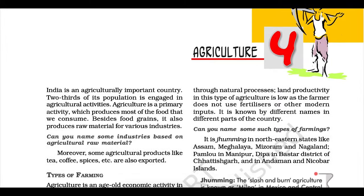Major crops. A variety of food and non-food crops are grown in different parts of the country, depending upon the variations in soil, climate, and cultivation practices. Major crops grown in India are rice, wheat, millets, pulses, tea, coffee, sugarcane, oilseeds, cotton, and jute. Rice is the staple food crop of a majority of people in India. Our country is the second largest producer of rice in the world after China. It is a Kharif crop which requires high temperature above 25 degrees centigrade and high humidity with annual rainfall above 100 centimeters. In areas of less rainfall, it grows with the help of irrigation. Rice is grown in the plains of north and northeastern India, coastal areas, and the deltaic regions. Development of a dense network of canal irrigation and tube wells have made it possible to grow rice in areas of less rainfall, such as Punjab, Haryana, western Uttar Pradesh, and parts of Rajasthan.